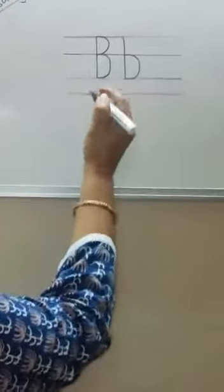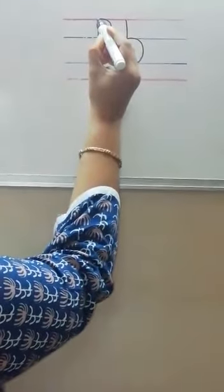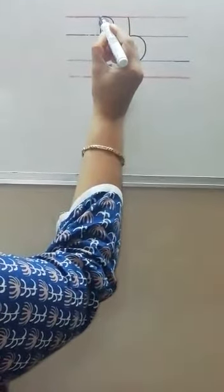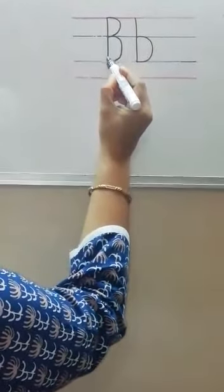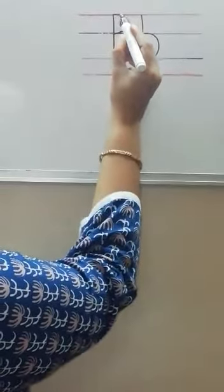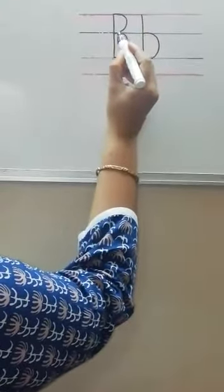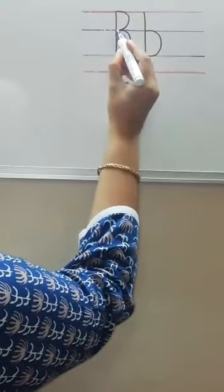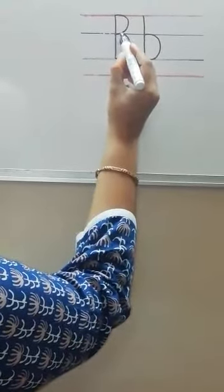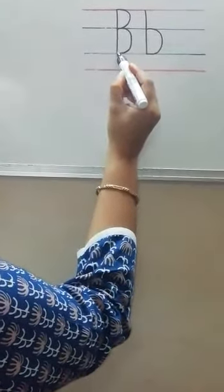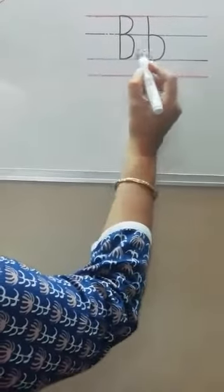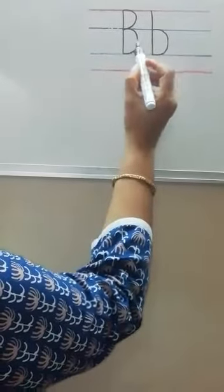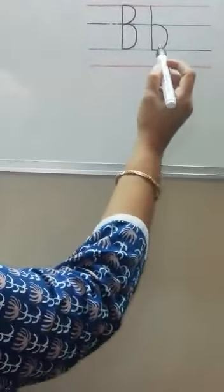And how do we write capital B? We will start from the top, from the red line, and we will go down. Then we will take one curve till the first blue line and then a second curve till the bottom blue line. The sound of b is 'b'.